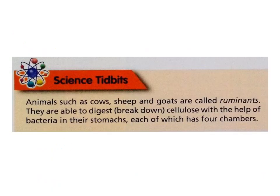As a science tidbit, animals such as cows, sheep and goats are called ruminants because they are able to digest and break down cellulose with the help of bacteria in their stomach. Their stomachs basically have four chambers which contain different bacteria that help them digest cellulose properly.